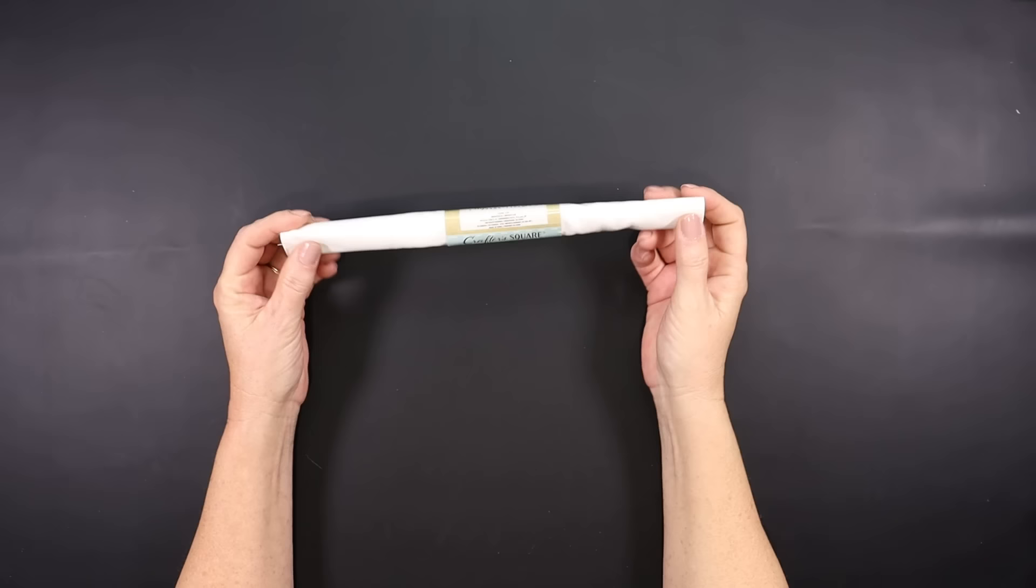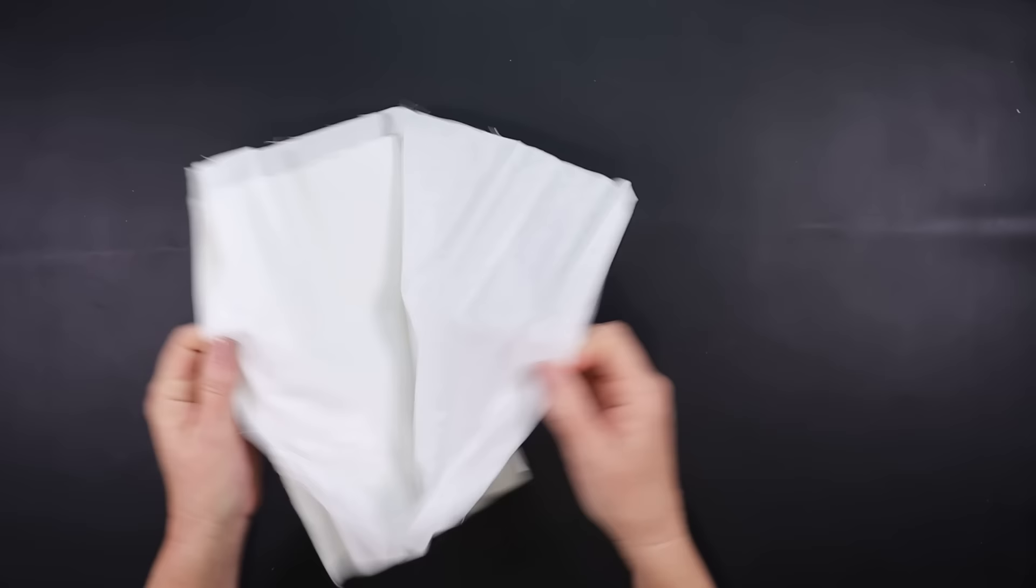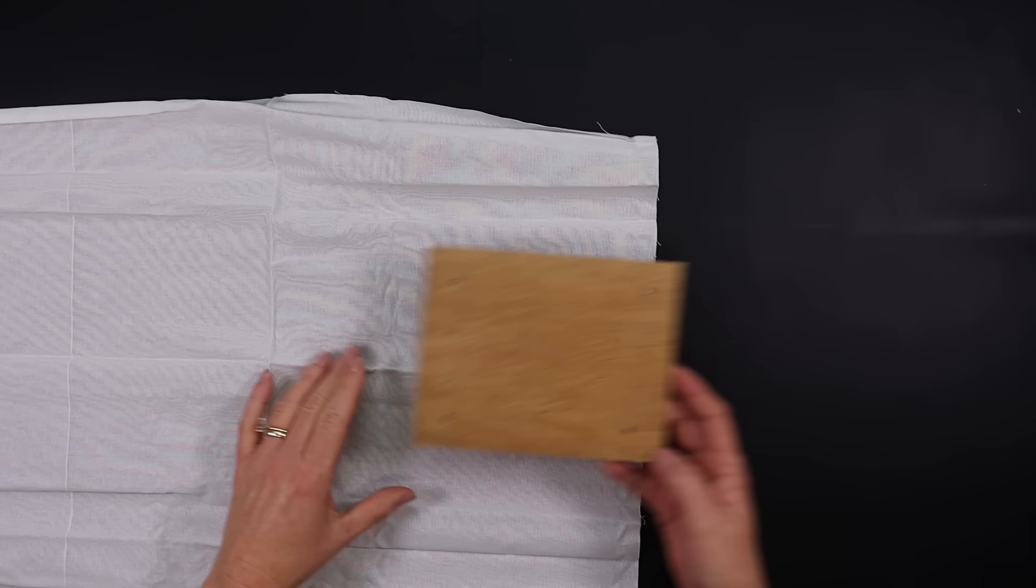Dollar Tree carries fabric in a variety of different colors and patterns. If you cannot find these rolls in the Crafter's Square section, make sure to check out the Plus section. They usually have seasonal bundles.